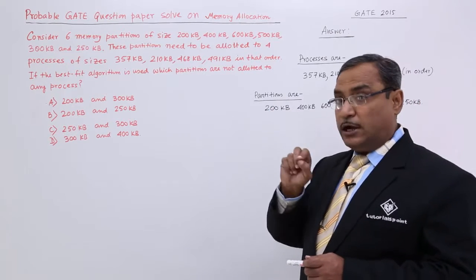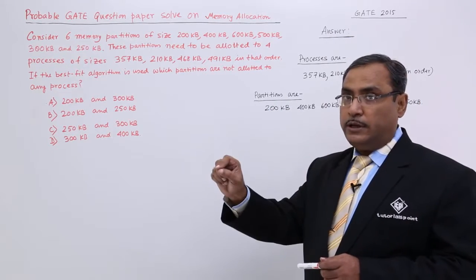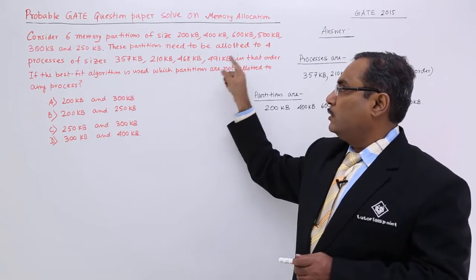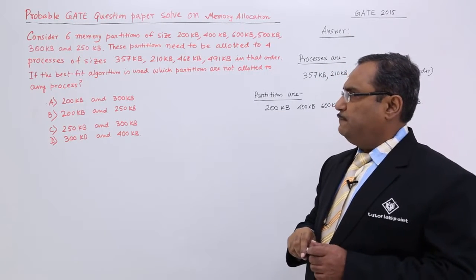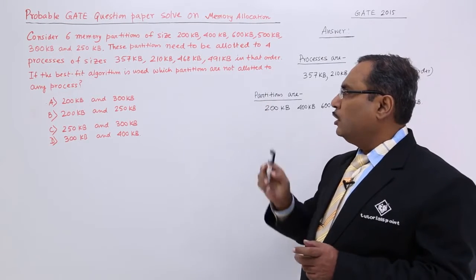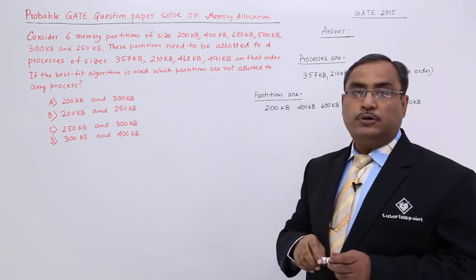These partitions are to be allocated in this order only. You cannot move here and there, they are to be treated in this order only. If the best fit algorithm is used, which partitions are not allocated to any process?